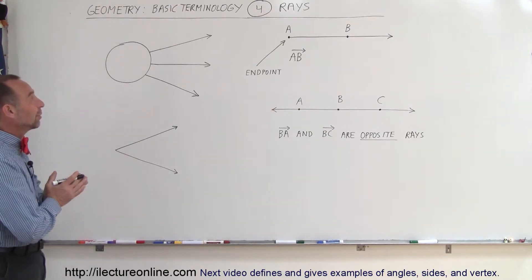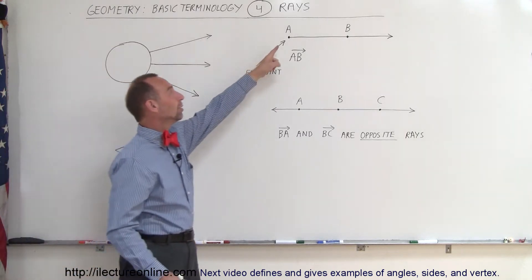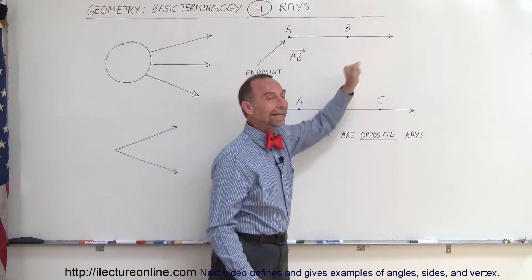It's a simple concept. A ray is kind of like a line that is chopped off on one end, so it has an endpoint and it goes infinitely far in the other direction.